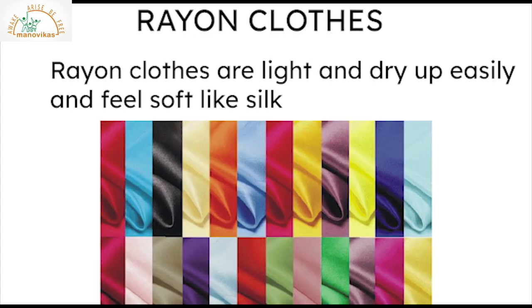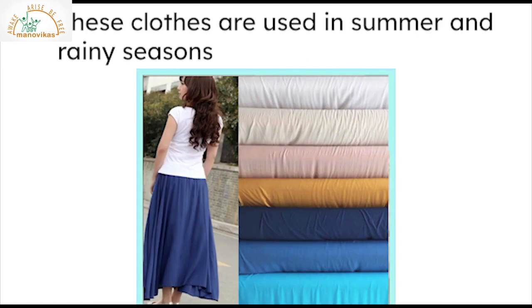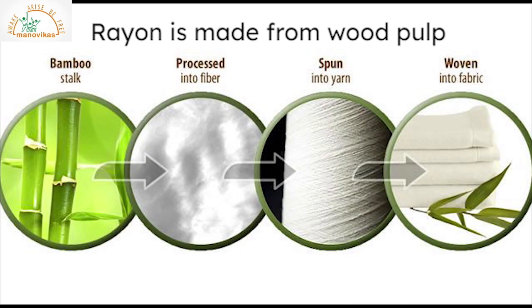Rayon clothes: rayon clothes are light, dry up easily and feel soft like silk. These clothes are used in summer and the rainy season. Rayon is made from wood pulp.